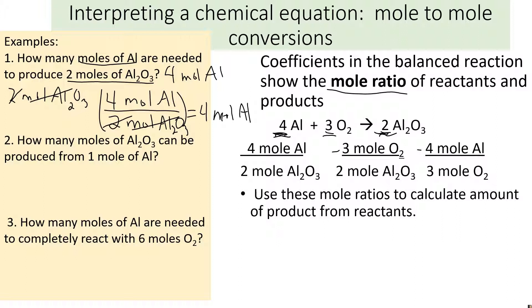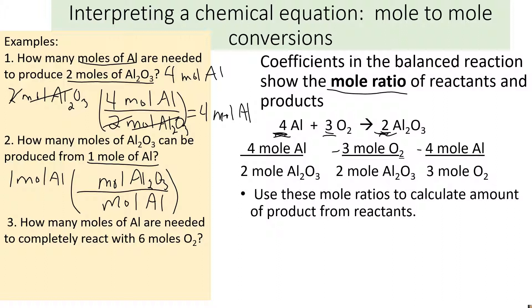Try the next one yourself, then pause it. The question: how many moles of aluminum oxide can be produced from one mole of aluminum? Our given is one mole of aluminum. Our find is Al₂O₃, so that goes on top, and moles of aluminum goes on the bottom. The numbers from the reaction are four for aluminum and two for aluminum oxide, so that equals two over four — 0.5 moles of Al₂O₃. If we have one mole of aluminum, we can make half a mole of aluminum oxide.